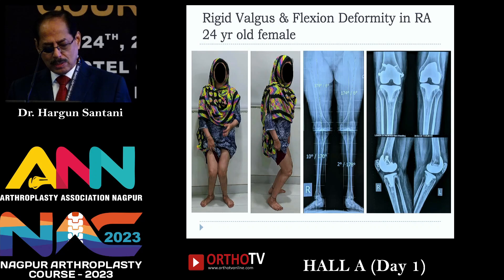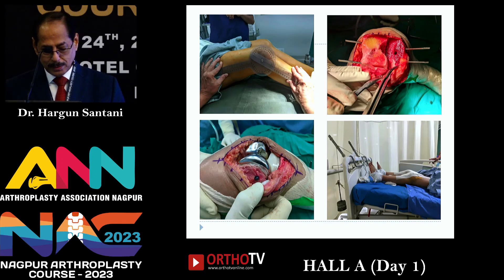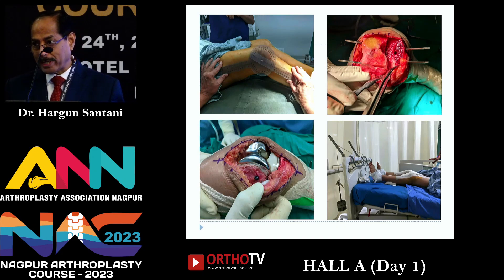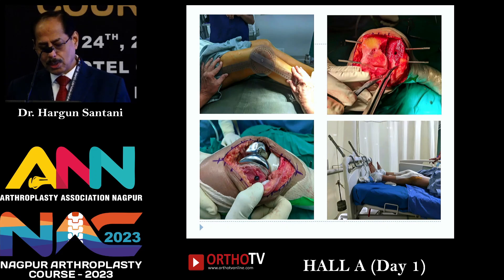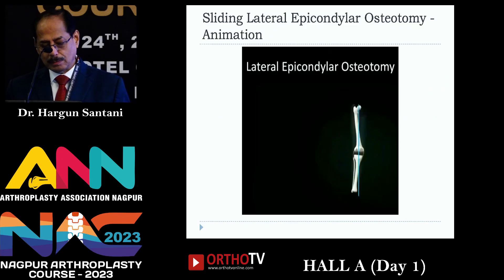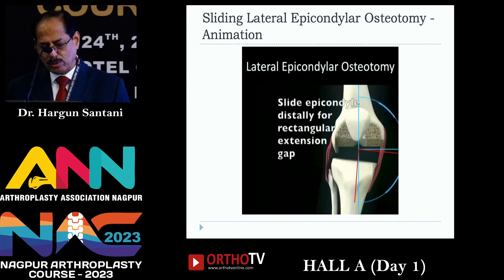Here is one example of severe valgus and flexion deformity. Under anesthesia she had significant residual flexion, and we had to perform sliding epicondylar osteotomy. After fixation of the implant, we fix the osteotomy distally and slightly posteriorly. I do not try to correct this deformity on the table because you can actually physically feel the pulsation disappearing. I put them on skeletal traction — I have been doing this for a number of years — and they gradually stretch out, then I put them in a plaster cylinder. This animated video shows how the lateral epicondylar osteotomy is done and then fixed with two screws.